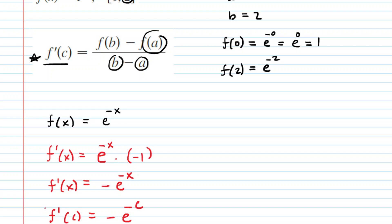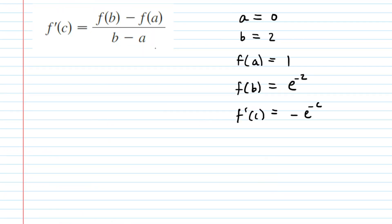So f prime of c would equal negative e to the power of negative c. So that is the fifth and final component that we need for the conclusion of the mean value theorem. Let's rewrite the conclusion as well as everything that we know so far. And what we'll do next is plug in all five components.